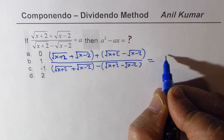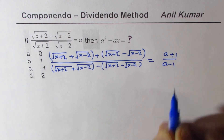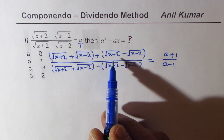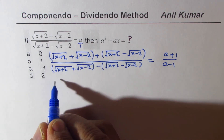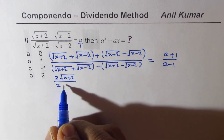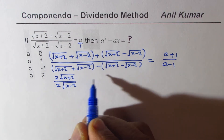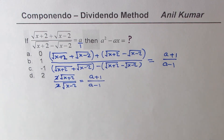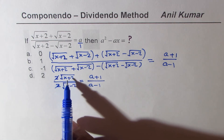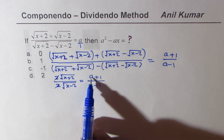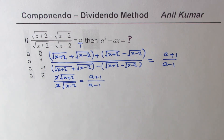On the right side we get (a plus 1) over (a minus 1), since a can be written as a over 1. In the numerator the middle terms cancel, leaving 2 times square root of (x plus 2), divided by 2 times square root of (x minus 2), equal to (a plus 1) over (a minus 1). The 2s cancel, giving square root of (x plus 2) over square root of (x minus 2) equals (a plus 1) over (a minus 1). Now we square both sides.